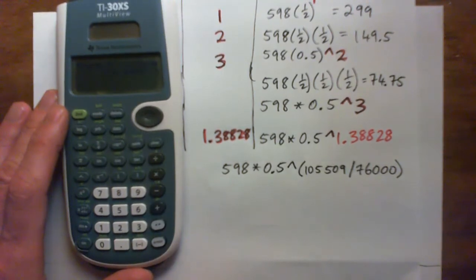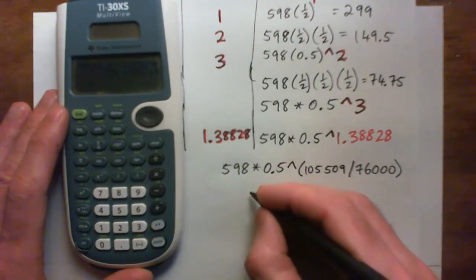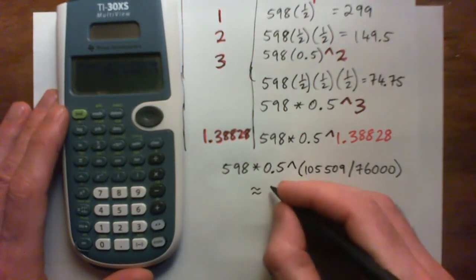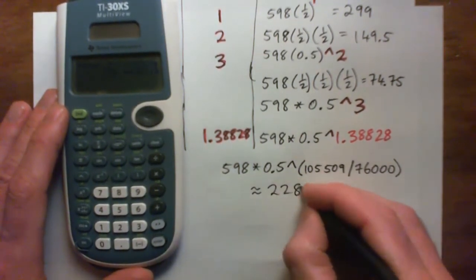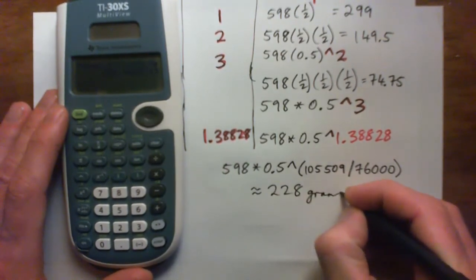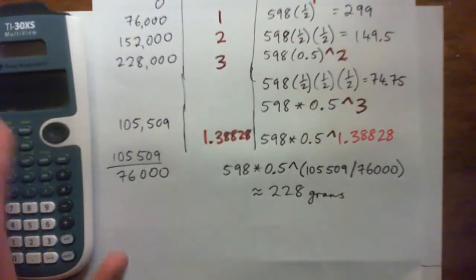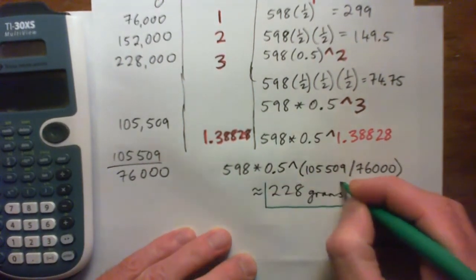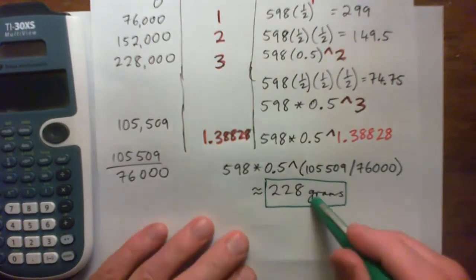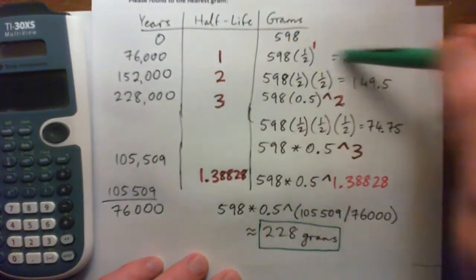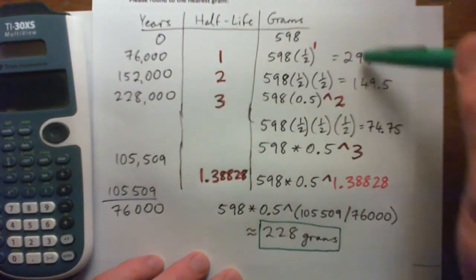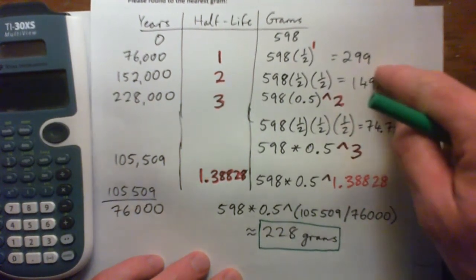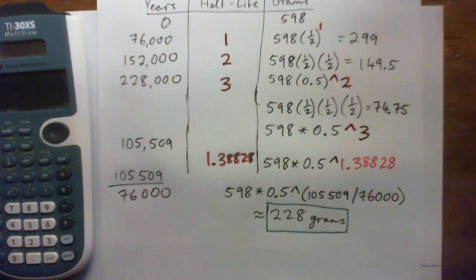And I get 228.44 grams. So that's approximately 228 grams. It says round to the nearest gram, so I'm rounding to the nearest gram. That makes sense. And is that kind of in between our one half-life and our two half-lives? It is. 228 is in between 299 and 149. So it seems right.